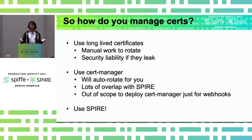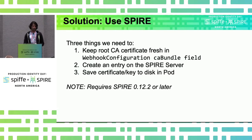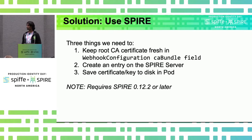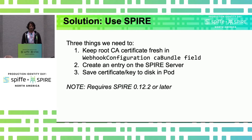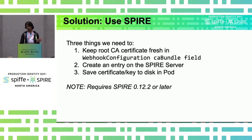The solution we came up with, working with the Spire team, contributors, and maintainers, is to use Spire to manage certificates. The solution is based a lot on how CertManager does it. There are three basic steps: first, keeping the root CA certificate fresh within the validating or mutating webhook configuration's CA bundle field; second, creating an entry on the Spire server for the actual webhook pod; and third, saving that certificate and key to disk on the pod. Just a note that this requires Spire 1.2.2 or later.